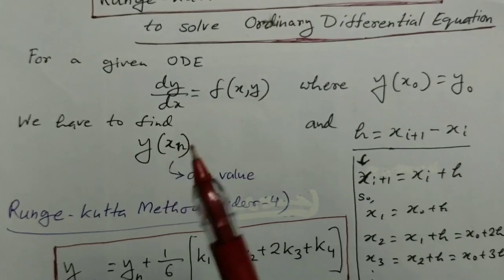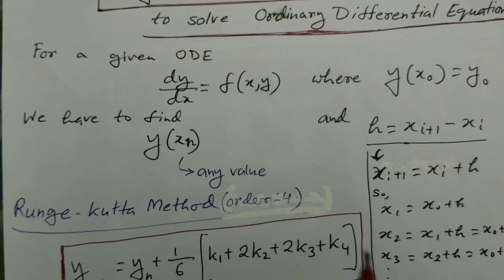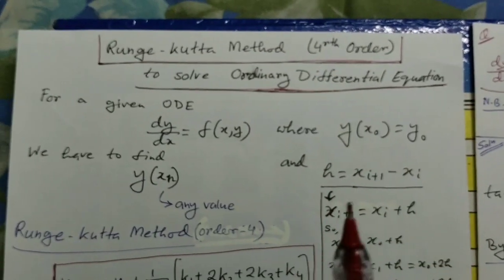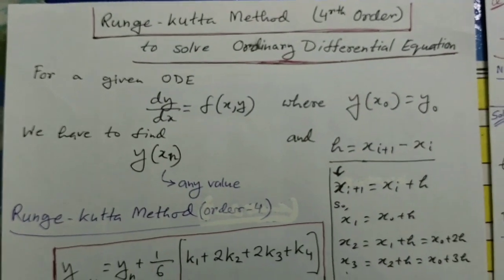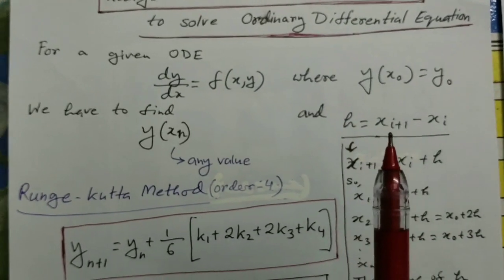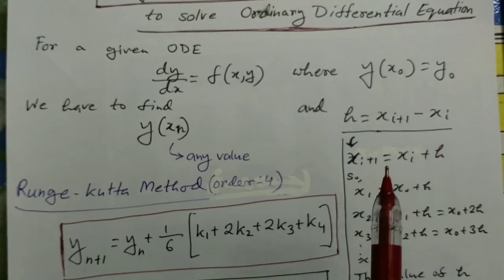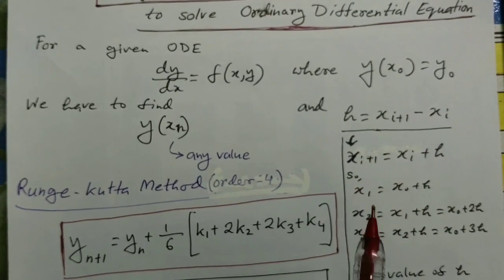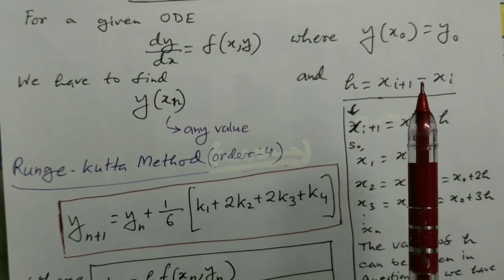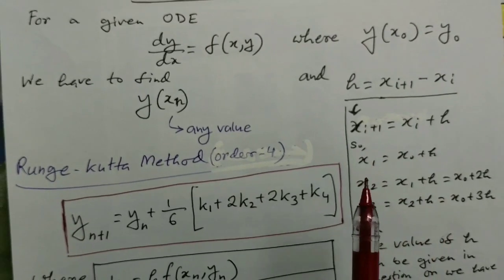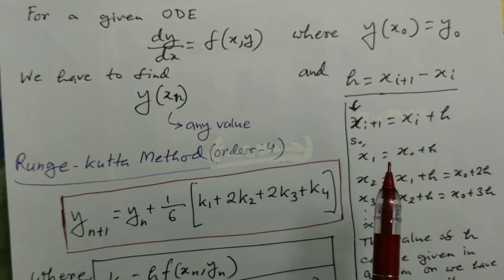One important thing to consider is the difference between two consecutive instances of x, termed as h. h = xᵢ₊₁ − xᵢ, that is the difference between x₀ and x₁, x₁ and x₂, x₂ and x₃, and so on. From this equation, xᵢ₊₁ = xᵢ + h.